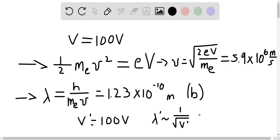Comparing lambda prime to lambda, so lambda prime over lambda, everything cancels except for the 100 value.